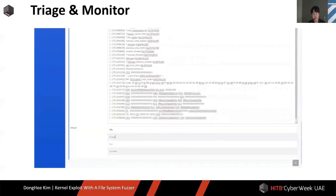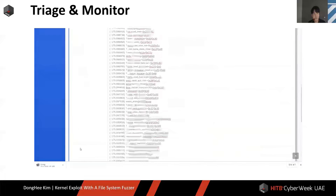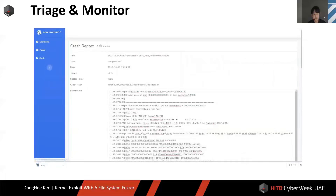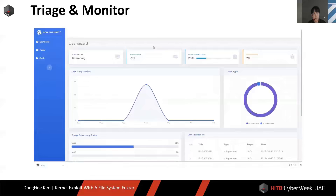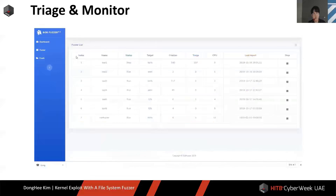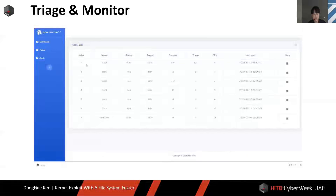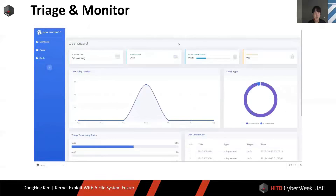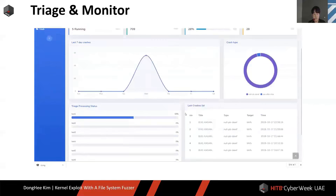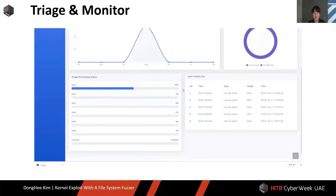Click the image at the bottom to download. You can also check the running fuzzers on the dashboard and press stop to stop them. You can also check the crash and trace types of the last seven days on the dashboard. Below that, you can see the triager process status and a list of recent crashes.